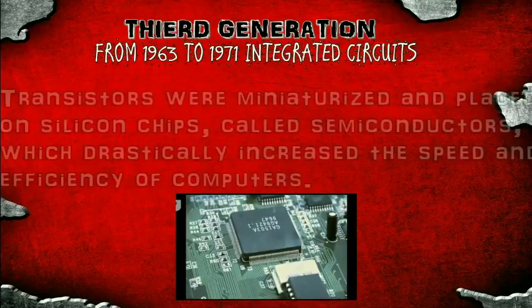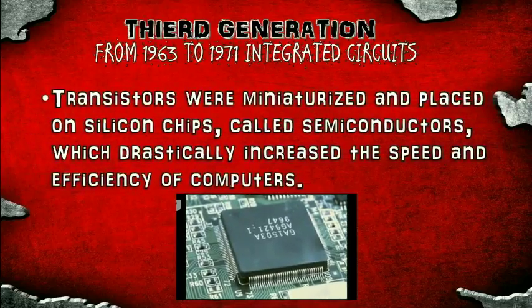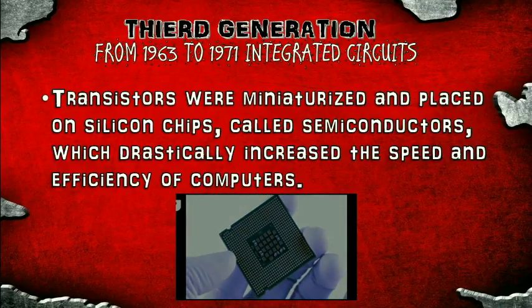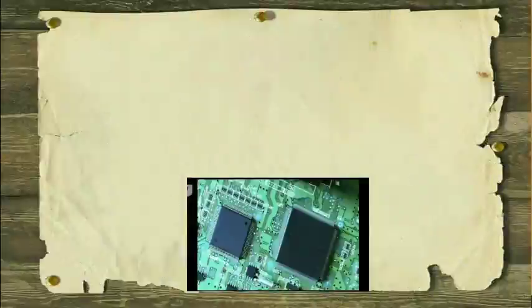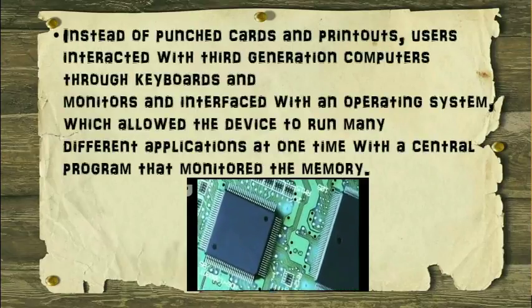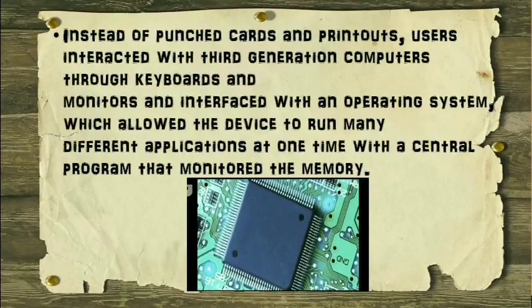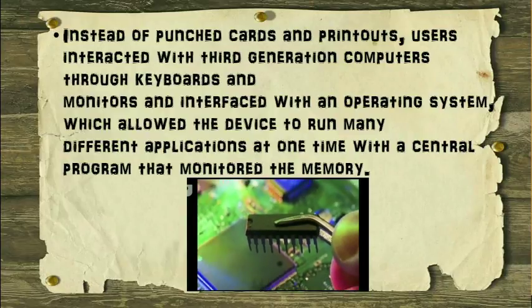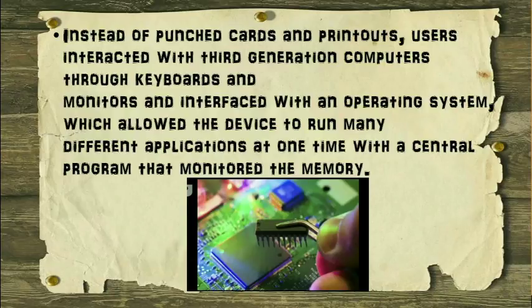In the third generation, transistors were miniaturized and placed on silicon chips called semiconductors, which drastically increased the speed and efficiency of computers. Instead of punch cards and printouts, users interacted with third generation computers through keyboard and monitor, and interfaced with an operating system which allowed the device to run many different applications at one time with a central program that monitored the memory.